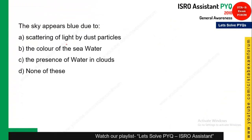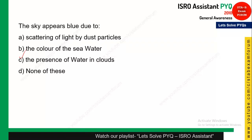This is from general science and is a very easy one: the sky appears blue due to what? It is not the color of seawater, it is not the presence of water in clouds — it is the scattering of light by dust particles. When light is scattered, your sky appears blue.